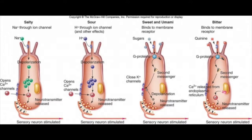Taste transduction occurs through three different mechanisms. Salty taste is due to sodium influx through sodium channels, which directly depolarizes gustatory epithelial cells. Sour is mediated by hydrogen, which acts intracellularly to open channels that allow other cations to enter. Bitter and sweet responses share a common mechanism, but each occurs in a different cell. Each taste's unique set of receptors is coupled to a common protein called gustucin. Activation leads to the release of calcium from intracellular stores, which causes cation channels in the plasma membrane to open, thereby depolarizing the cell and releasing the neurotransmitter ATP.